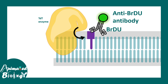It can also be BrdU, which can be detected by anti-BrdU fluorescent conjugate antibodies. This is how the overall TUNEL assay works. The labeling might be different, but the principle of the assay is the same — detection with the help of any kind of fluorescence method — and the TDT enzyme holds the key importance.